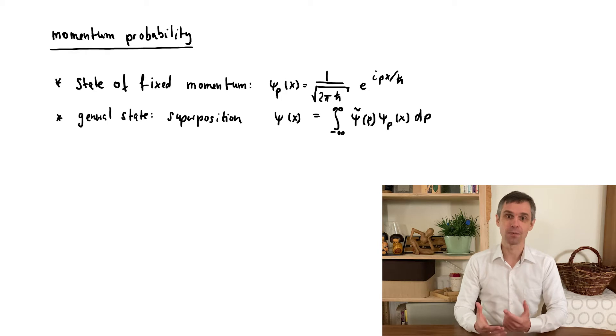We denote the amplitudes of the different components as ψ̃(p). In general this is some complex valued function. Incidentally, that this is possible has much to do with some of the conditions on our wave functions that we mentioned earlier, such as their continuity and the boundary conditions.